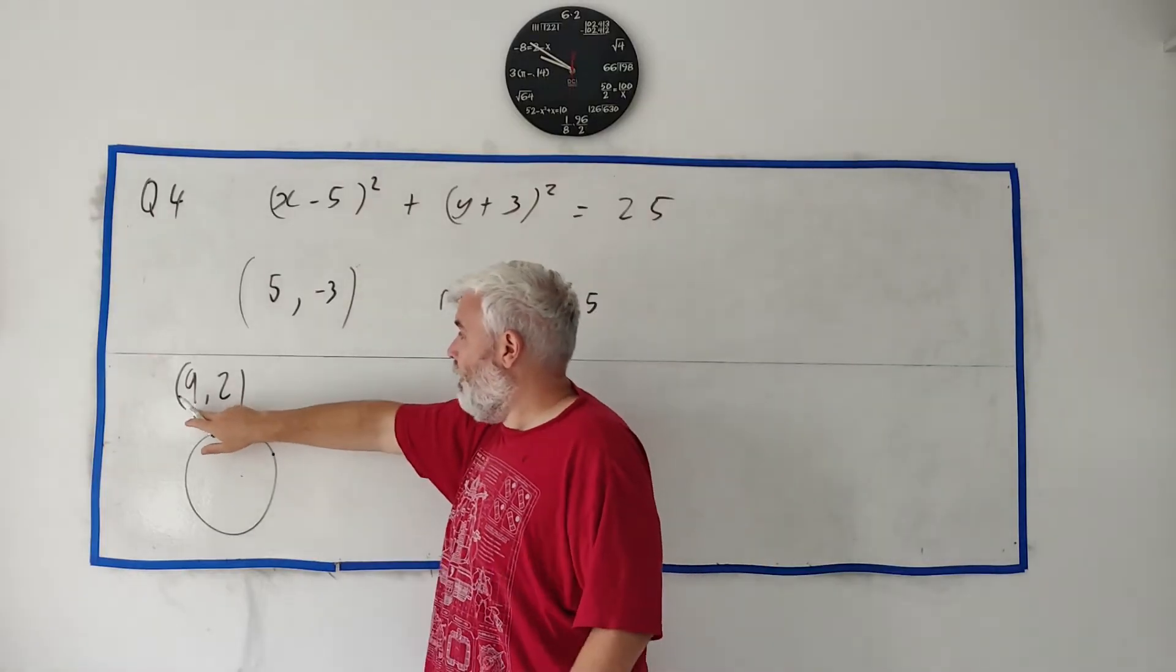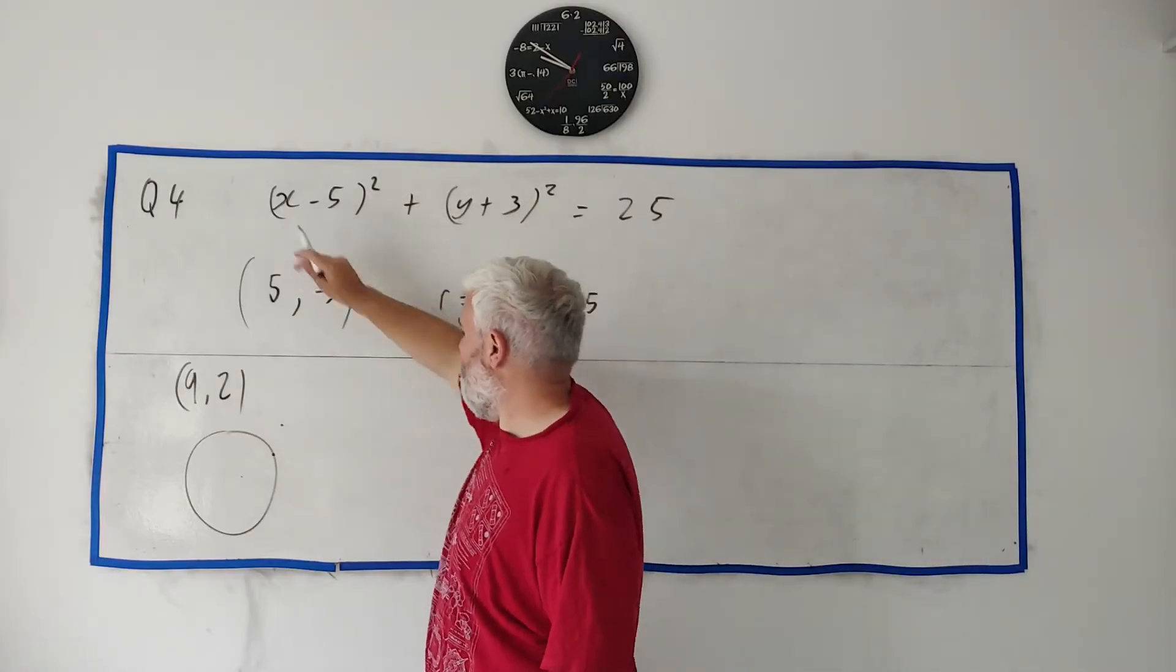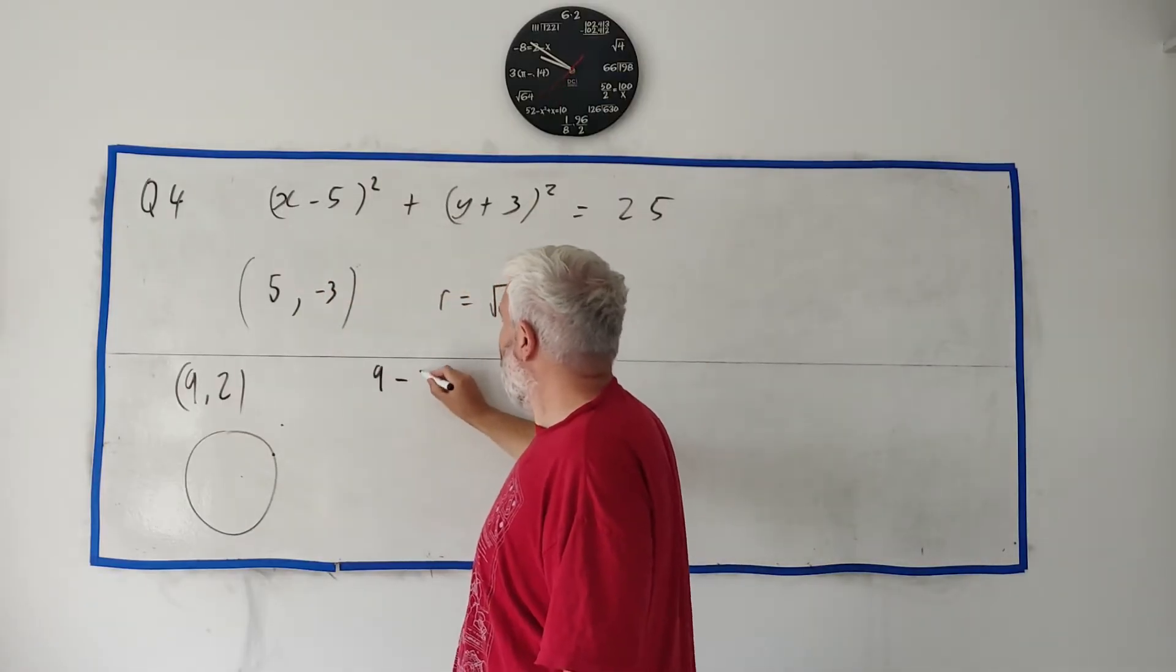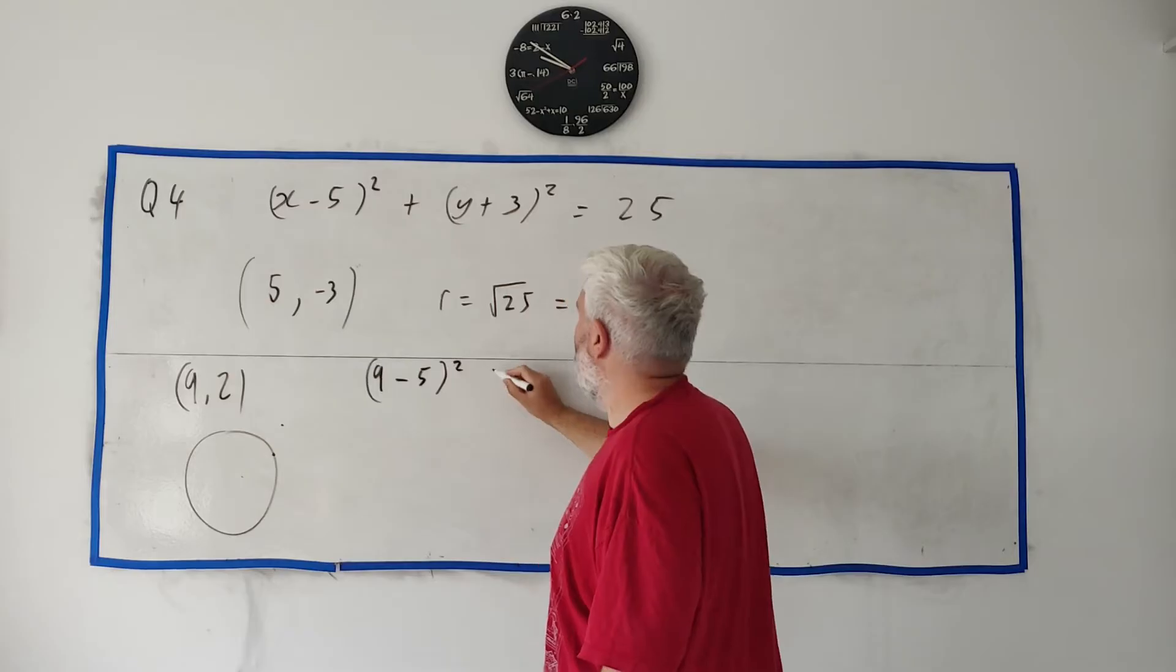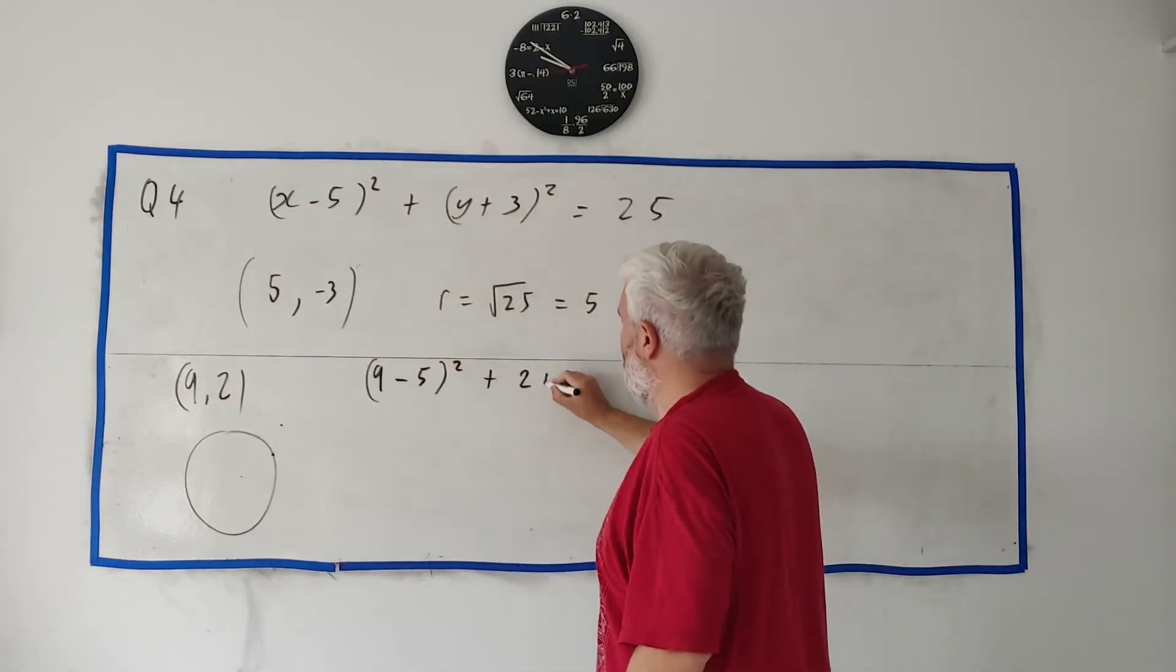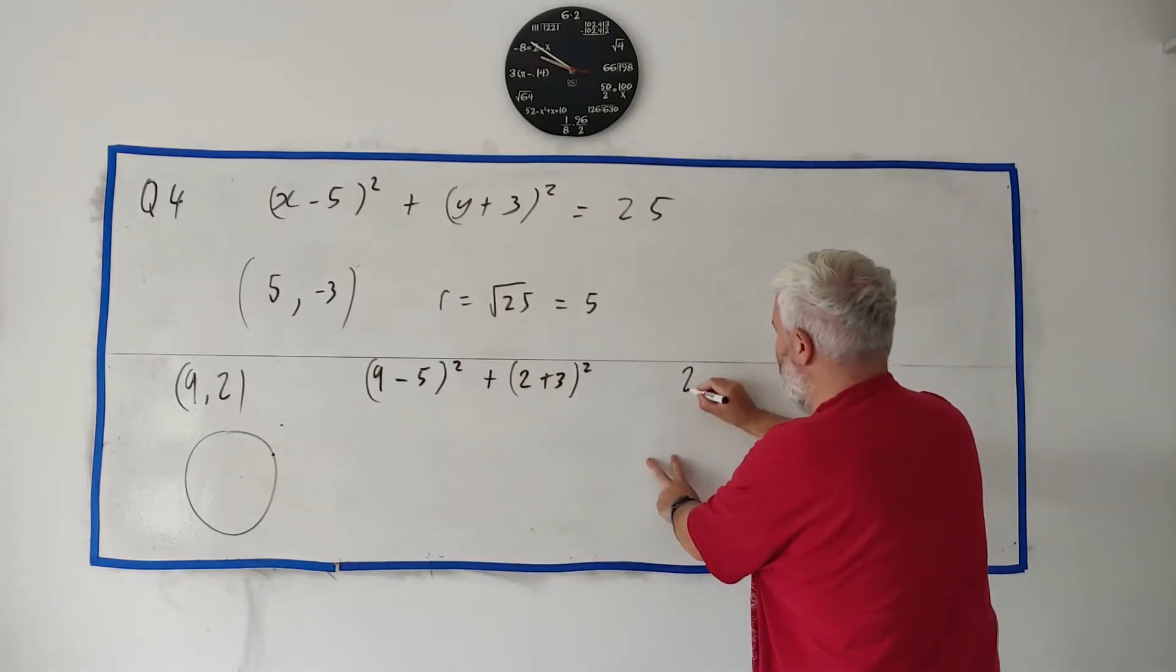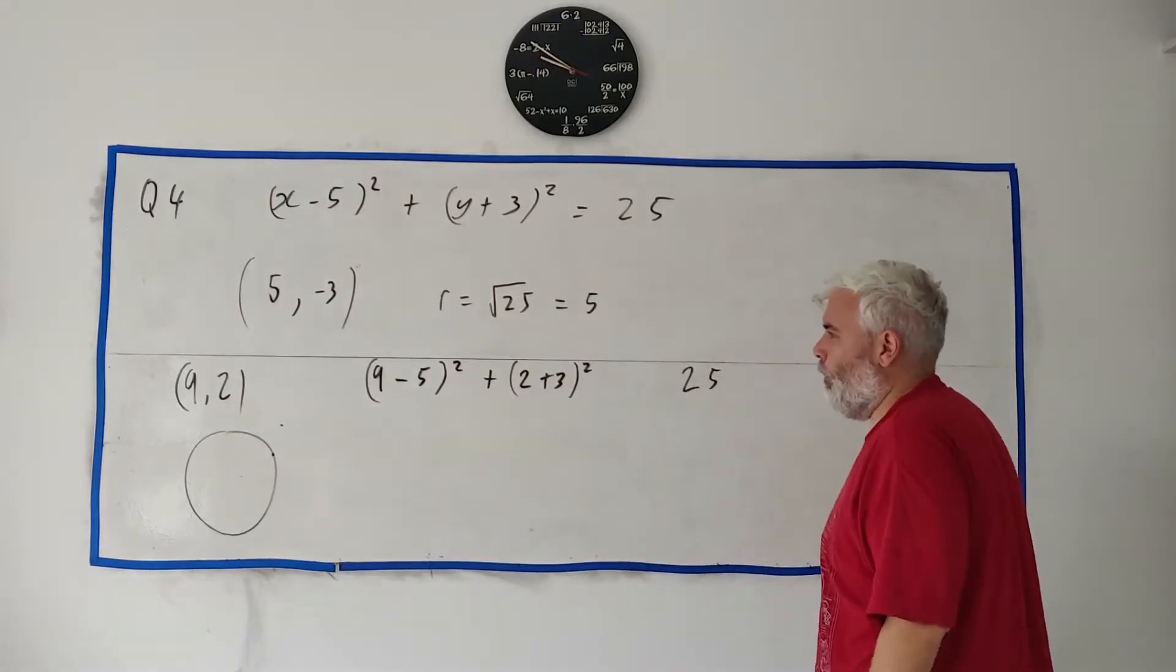If we put in 9 as an x, because that's the x part, and 2 as a y, what do we get? So if we put in 9, we get (9 - 5)² plus, put the 2 in for the y, (2 + 3)², and I won't put in equals here, I'll just put 25. You'll see why in a moment.